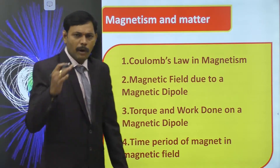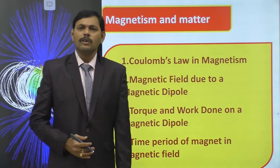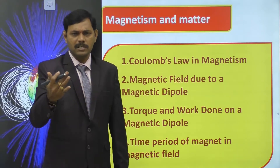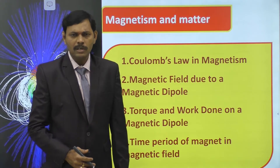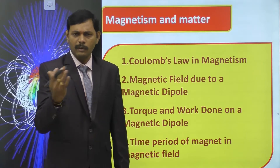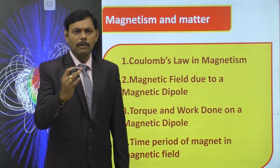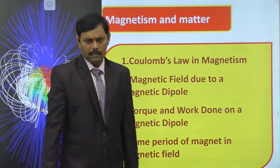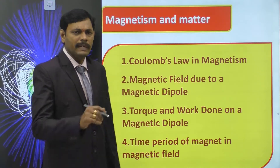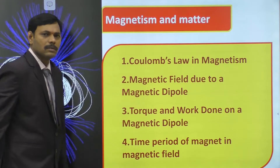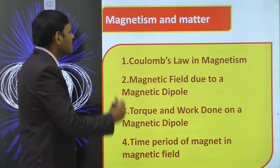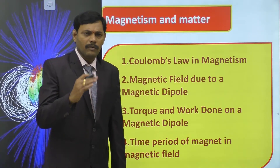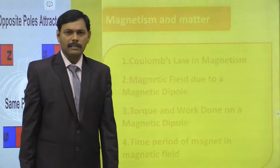Fourth: when a bar magnet is placed in a uniform magnetic field and slightly displaced from its equilibrium position and released, it may oscillate — vibrate to and fro about its mean position. Then what is the time period of vibration of the magnet will be discussed as the fourth content. These are the contents we continue in our discussion of Magnetism on Matter.